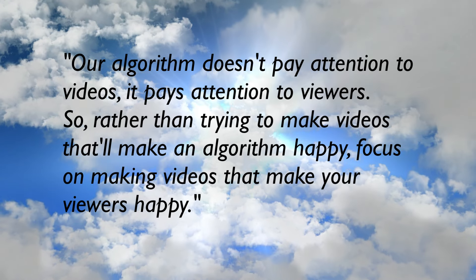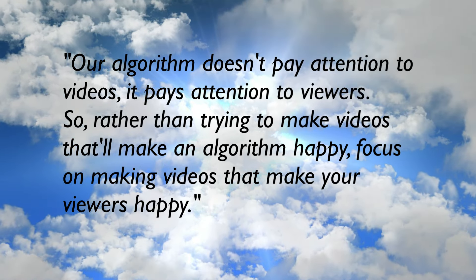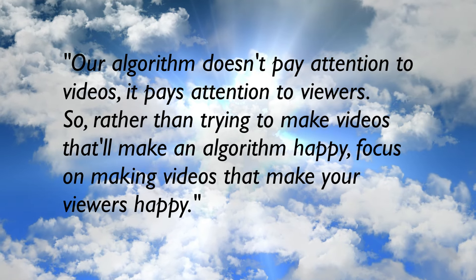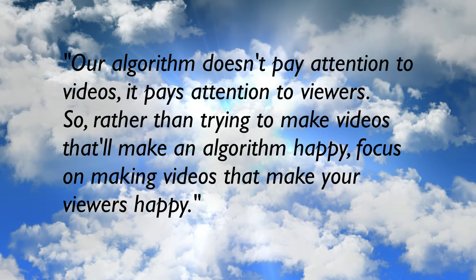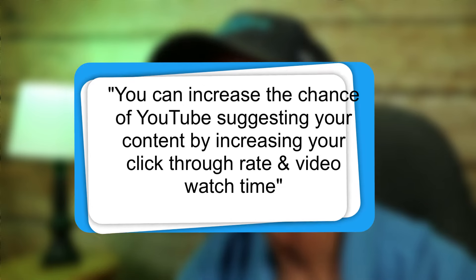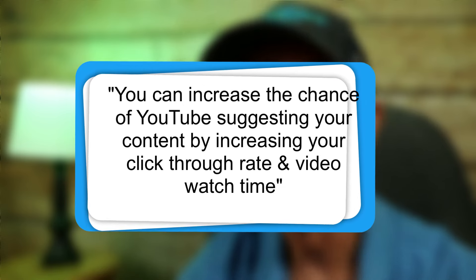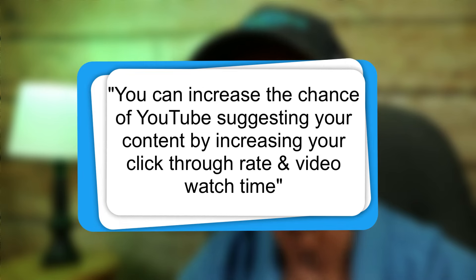YouTube says: 'Our algorithm doesn't pay attention to videos, it pays attention to viewers.' Rather than trying to make videos that make an algorithm happy, focus on making videos that make your viewers happy. This means the algorithm doesn't recommend videos based upon popularity, but whether the individual viewer watches the next video, then the next. Two viewers will get different results even when searching for the same information. YouTube says you can increase the chance of YouTube suggesting your content by increasing your click-through rate and video watch time.